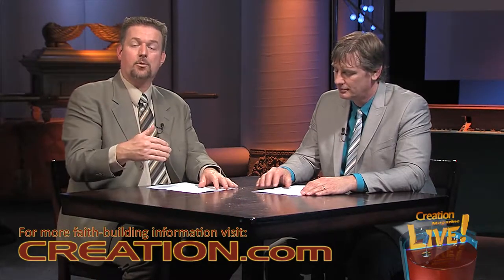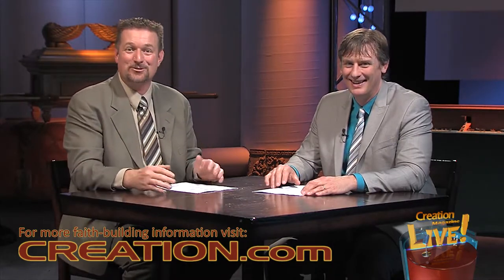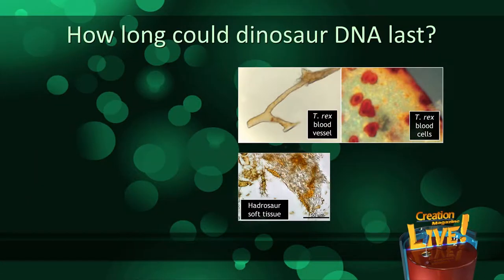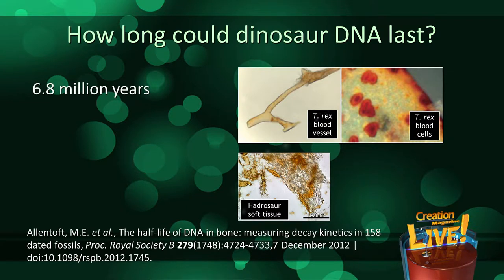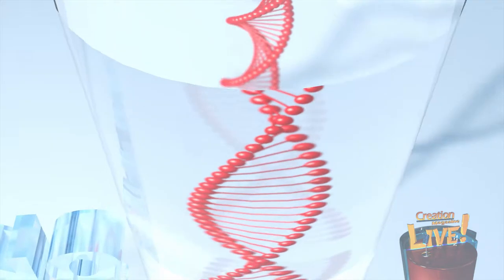Evolutionists have been scrambling to make sense of all of this, and so far all the explanations fall short. Some work has been done to find support that DNA could last 65 million years — back to when these dinosaurs apparently went extinct according to evolution. But when you ask science how long DNA could last, the answer is: under ideal conditions, 6.8 million years. Not 65 million — that's only about 10% of where they need to get to. And those ideal conditions include the DNA being frozen solid, yet they're finding soft tissue in places like Hell Creek, Montana. For more information visit creation.com/dino-dna.